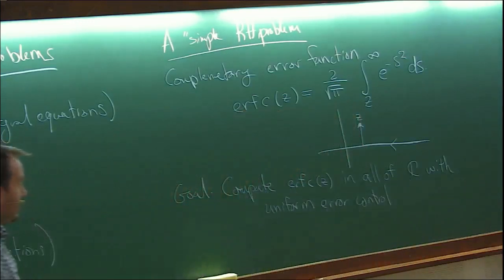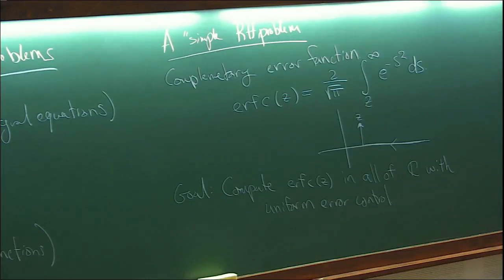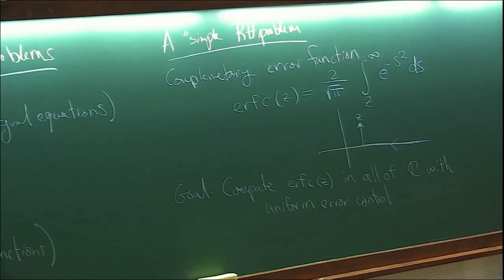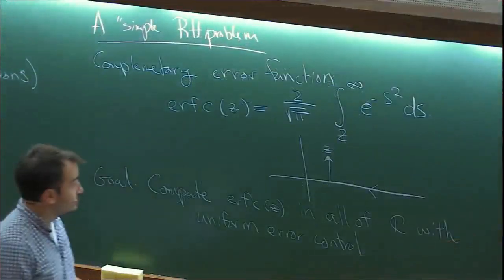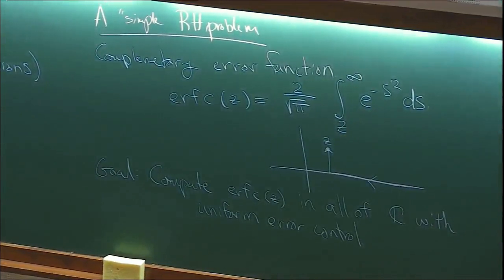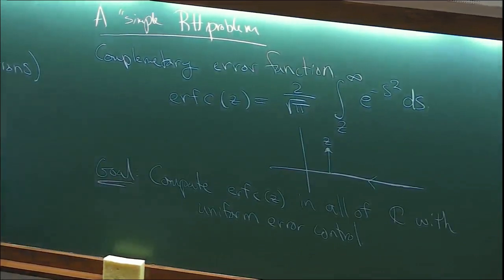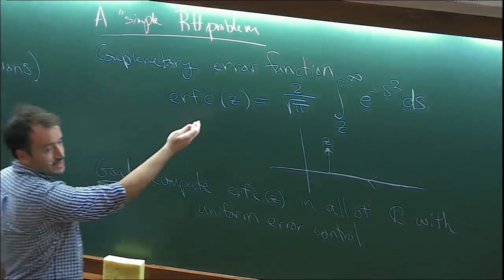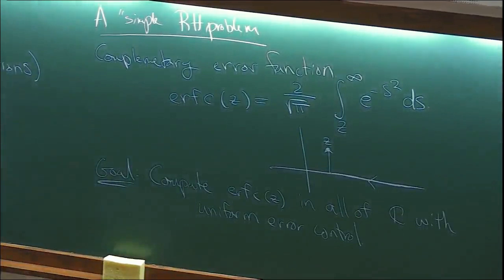I want to be able to plug in any value in ℂ and have really my relative error controlled - that's the power of the Riemann-Hilbert theory. Today I'll pose a Riemann-Hilbert problem for the error function. To motivate why one might want to do this rather than use the explicit integral: what if z is very high up on the imaginary axis? We're going to have some growth, and the integral could be oscillatory and difficult.